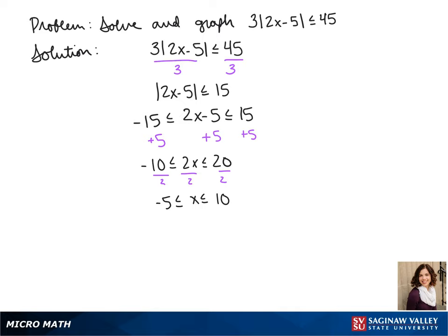So our solutions can be anything between negative 5 and 10. Our interval would be negative 5 to 10, and since it's equal to those things, we would put a bracket on both to show that they're included and possible answers.